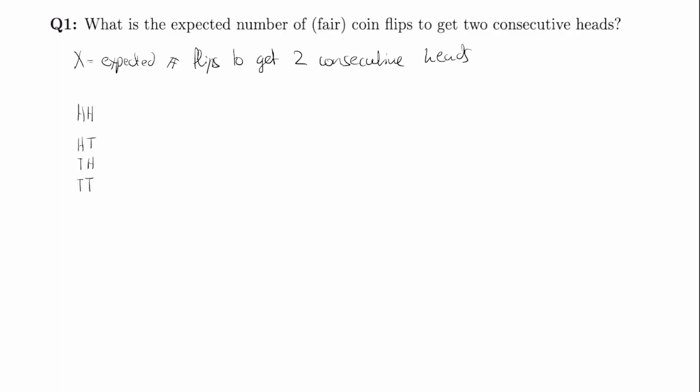We have our four scenarios defined. Note that each of these has a probability of one-fourth of happening since the coin is fair. For heads-heads, we just know that this takes two flips — the expected number of flips is two. Then for heads-tails, we know that we're back at the beginning, because after heads and tails we again just have to get two heads. So we're back basically where we started, meaning this would be X plus two. Same for tails-tails — this is X plus two as well, because we just start over and we've already flipped twice.